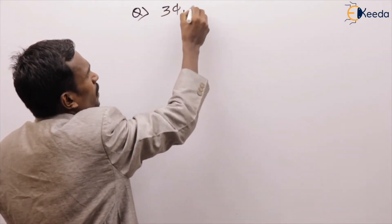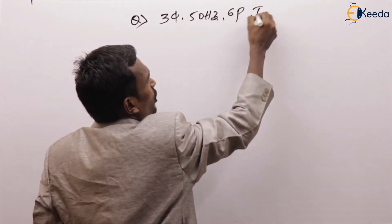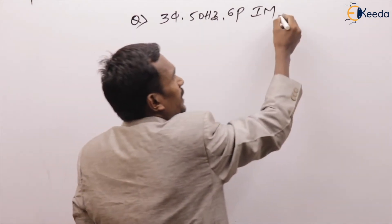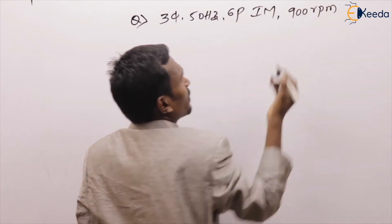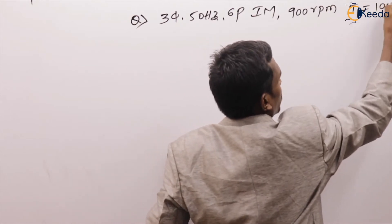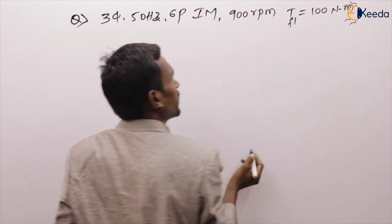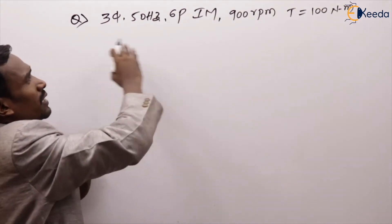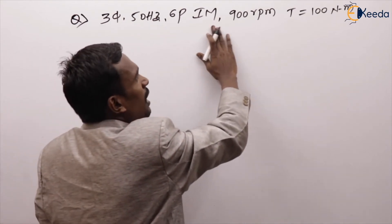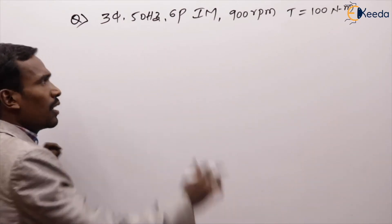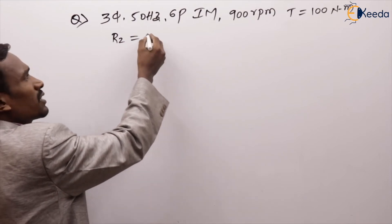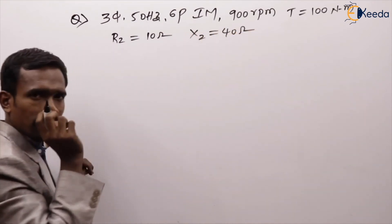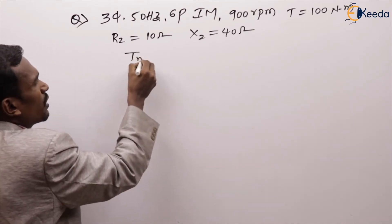My question: a three-phase, 50 Hz, six-pole induction motor operating at 900 RPM with a torque of 100 Newton meters. Rotor resistance is 10 ohms and rotor reactance is 40 ohms. Then find out the maximum torque.